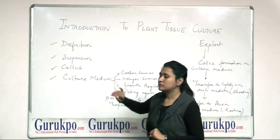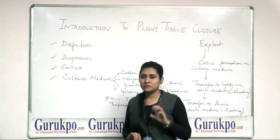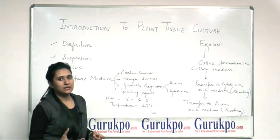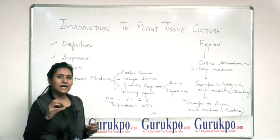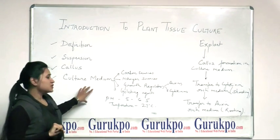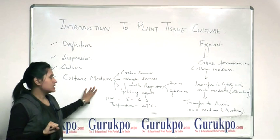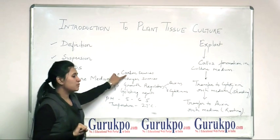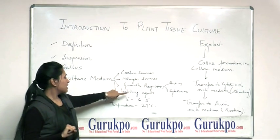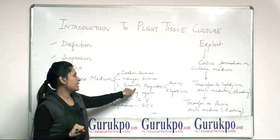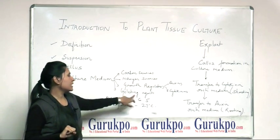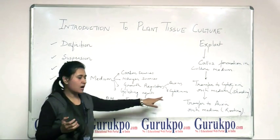Another important aspect is the culture medium — the medium where the explant grows to form callus. The culture medium contains carbon sources, nitrogen sources, growth regulators like auxins and cytokinins, and gelling agents like agar.